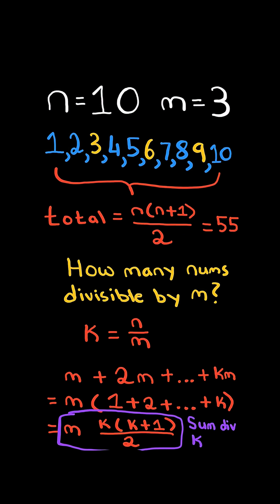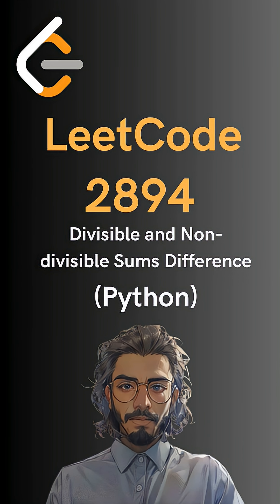And so this is the sum of numbers divisible by k. And we can subtract this from the total to get the sum of numbers not divisible by k. Here's the code to do so.